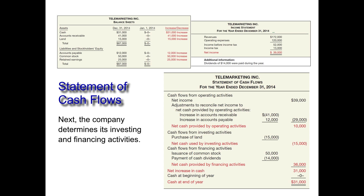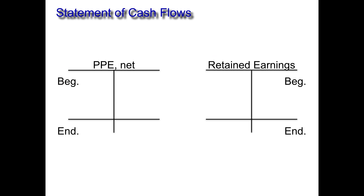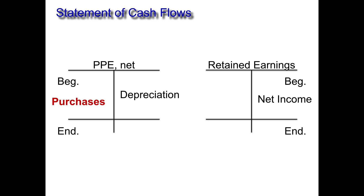Before we end our discussion on preparing the statement of cash flows, there are a couple of T-accounts to review: property, plant, and equipment net, and retained earnings. Sometimes you'll see PP&E listed as net, meaning net of depreciation, so depreciation has already come out. We recreate this T-account so we can find how much PP&E was purchased during the year — knowing the beginning balance, ending balance, and depreciation expense, we find purchases with simple math. For retained earnings: beginning retained earnings plus net income minus ending retained earnings gives us dividends for the period.